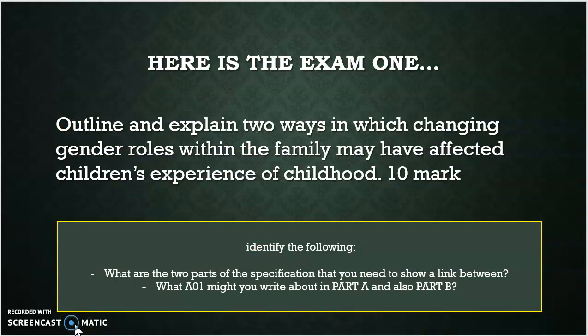And your final question is an exam one — a 10 marker: outline and explain two ways in which changing gender roles within the family may have affected children's experience of childhood. Now, I don't want you to actually answer a full 10 marker for this quiz — it's only a short quiz, it's a bit of fun. What I want you to do instead is just identify the two parts of the specification that you need to show a link between, label them part A and part B, then bullet point what AO1 you might write about in part A and what AO1 you'd write about in part B. And if you do want a longer video, I do go through this question already — I'll stick in the link.